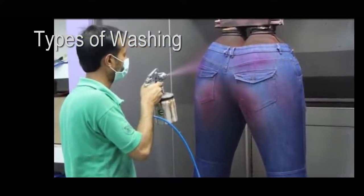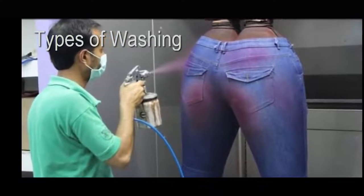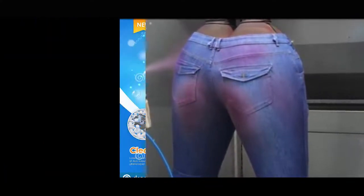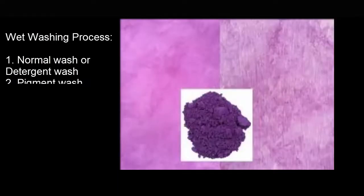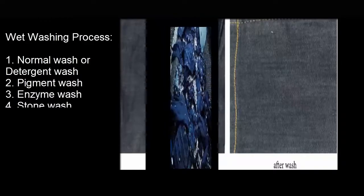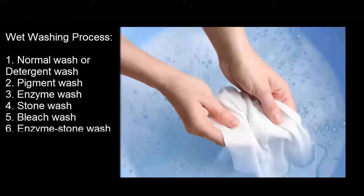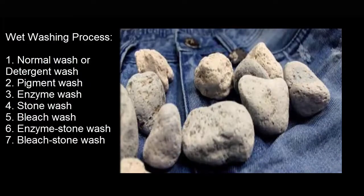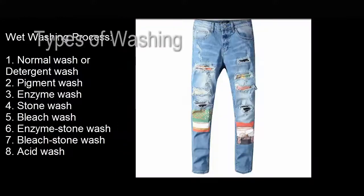The wet washing process is divided into eight groups: normal or detergent wash, pigment wash, enzyme wash, stone wash, bleach wash, enzyme stone wash, bleach stone wash, and acid wash.